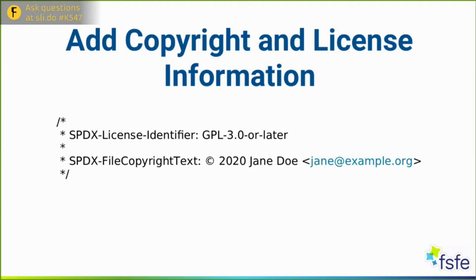A good copyright statement should consist of the following information. Start with the copyright sign — the C with the circle around it. Then the year of the first publication of the copyrighted work, which is the year you created the file and have not modified it since. Then include the name of the copyright holder, which is typically the author, but can also be your employer depending on agreements in place. For example, if your employment contract states that anything you produce in the course of employment belongs to your employer, then your employer is the copyright holder. Finally, include a valid contact for the copyright owner.